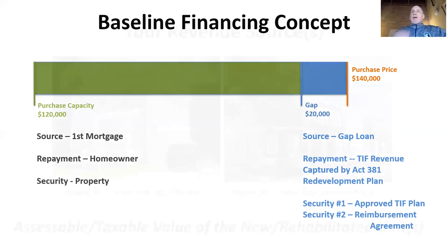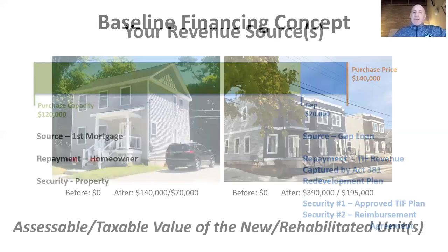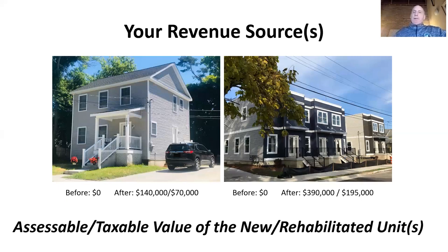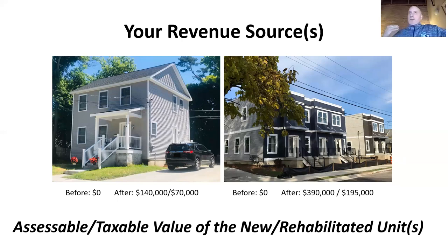Where do revenue sources come from? They come from the value of the new or the rehabilitated units. In these two cases — these are not TIF projects, but examples of new houses built on land bank properties in Grand Rapids — a property value which was zero before with a house built on it has an after value of $140,000, or $70,000 taxable value. Or townhouses: there are three townhouses in the other example on the right side — that's a zero lot value prior because it was owned by the land bank. Afterwards, it's $390,000. So there is value which is accessible, taxable, and capturable if a structure were organized to do that for projects with units like this.